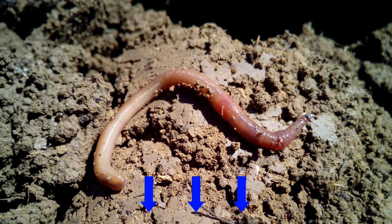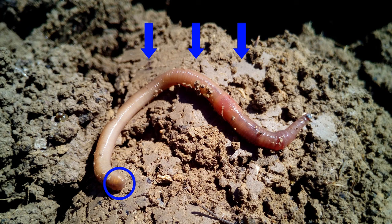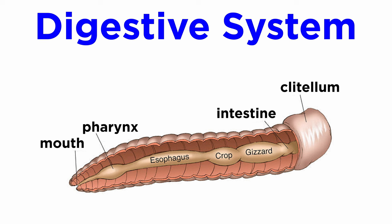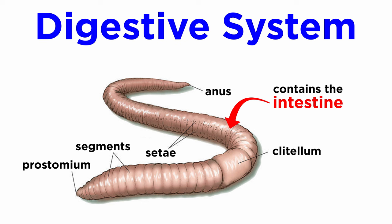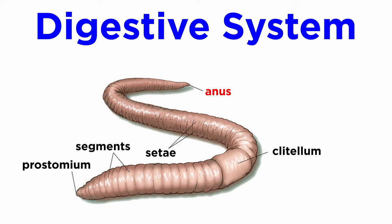They pull organic matter inward using their muscular pharynx, and soil is often incidentally ingested along with the food. Earthworms have a complete digestive system. After food is drawn into the mouth through the pharynx, it passes down the esophagus and is temporarily stored within the crop before being passed to the gizzard, where it is ground into small pieces. Ground food then passes to the intestine, where digestion and absorption take place. Undigested food is passed out the anus in the form of a nutrient-rich cast that helps fertilize the soil around the earthworm.